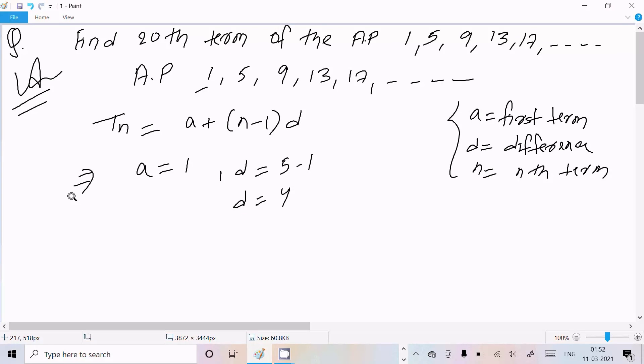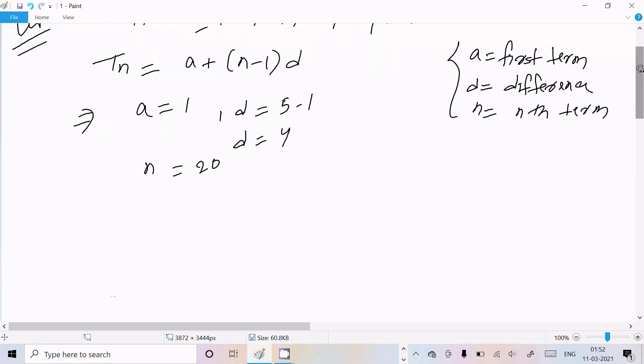Now here n equals 20, so let's calculate the 20th term. T20 equals a, here 1, plus 20 minus 1 times d which is 4. So 1 plus 20 minus 1, that's 19 into 4.